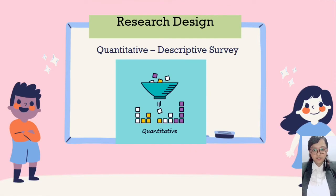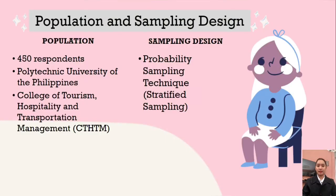Research design: The researchers used a descriptive quantitative survey for this study. It is a quantitative method which emphasizes the use of objective measurement — statistical, mathematical, or numerical analysis of data collected through polls, questionnaires, and surveys. Population and sampling: The study focuses on the effectiveness of e-learning on hospitality skills on the academic performance of CTHDM of PUP. The population of respondents totals 450. The researchers' sources of information are from PUP Santa Mesa students taking BSHM, BSTM, and BSTRM. The researchers used stratified sampling because of its speed, cost-effectiveness, and ease of availability of the sample. To understand the population better, the researchers needed only a sample, not the entire population.